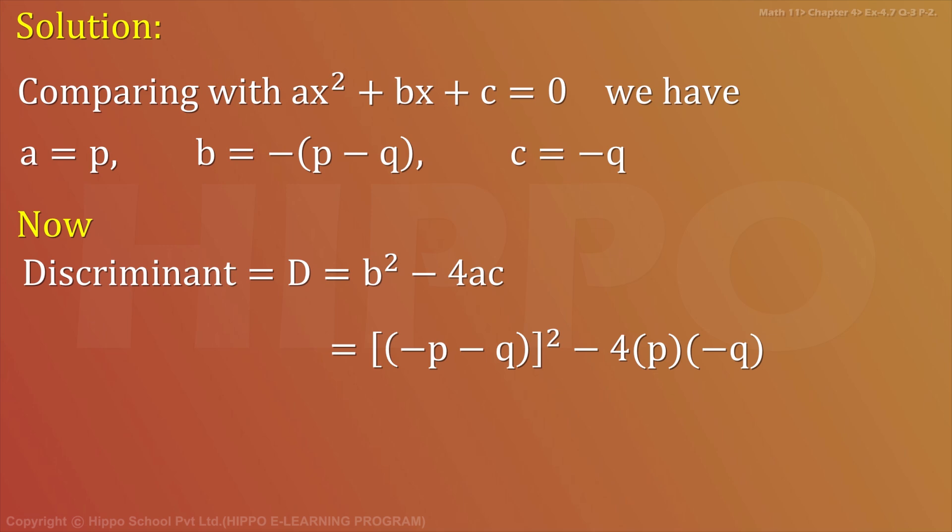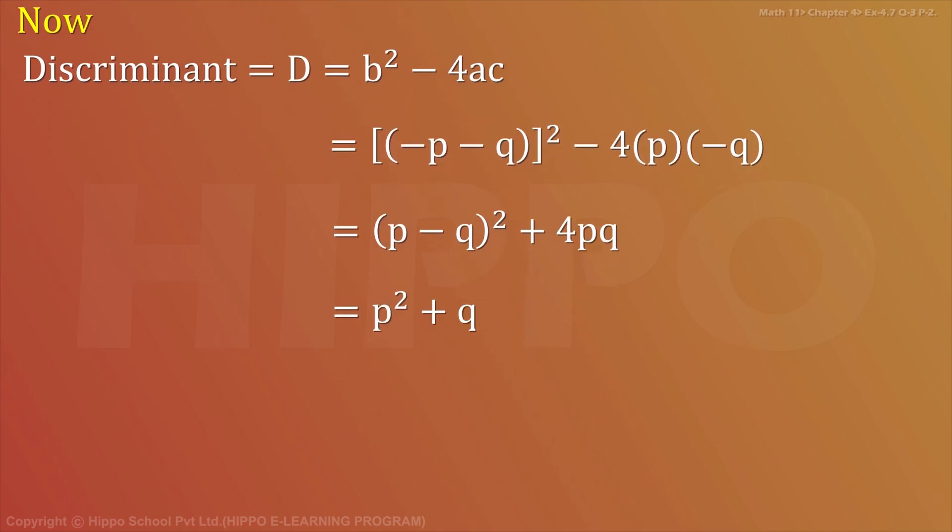This equals (p - q)² + 4pq. Expanding using the formula, we have p² + q² - 2pq + 4pq.